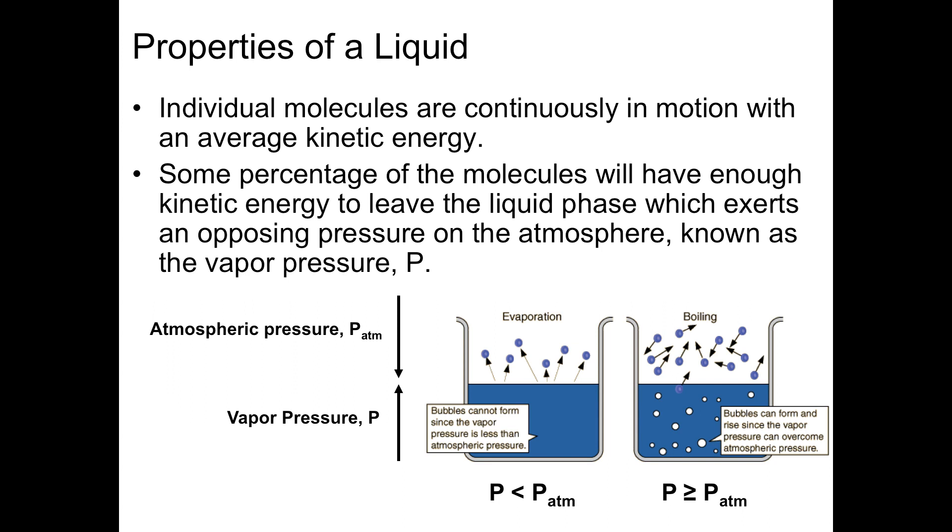As the temperature increases, vapor pressure increases, and so does the rate of evaporation. When the temperature increases to the point at which vapor pressure is equal to atmospheric pressure, bubbles will form throughout the liquid and rise to the surface. That's what we call boiling.